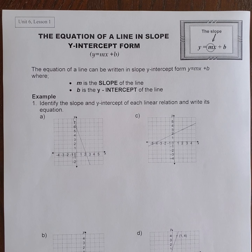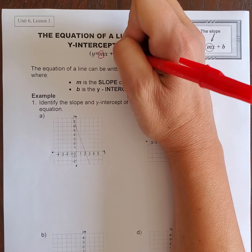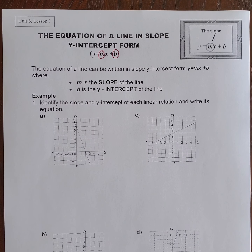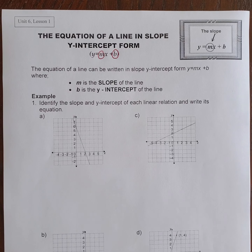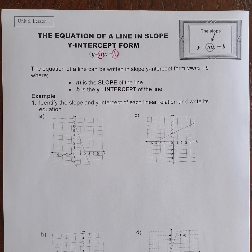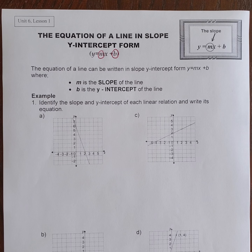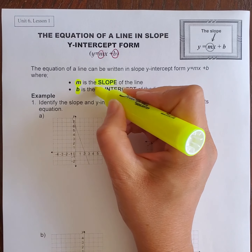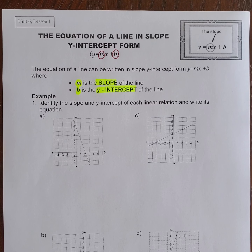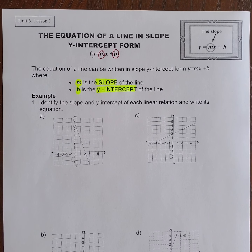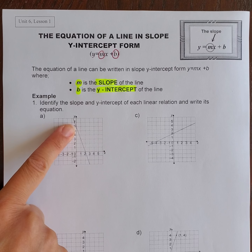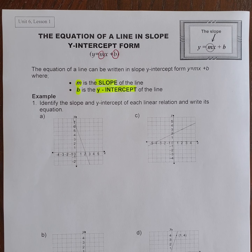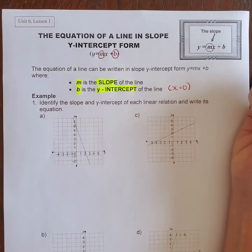There are two letters I want to highlight. The first is M, and the second is B. M represents the slope of your line, and this can be calculated through rise over run if you're given a graph, or using y2 minus y1 over x2 minus x1 if you're given points. B is the y-intercept of the line — where the line crosses the y-axis. You can read it from a graph or figure it out when x is equal to zero.